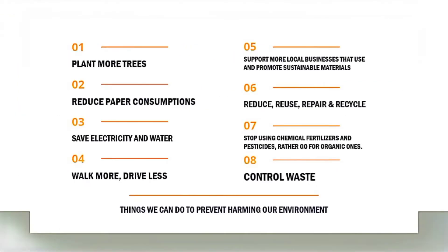Here are things we can do to prevent harming our environment: 1. Plant more trees. 2. Reduce paper consumption. 3. Save electricity and water. 4. Walk more, drive less. 5. Support more local businesses that use and promote sustainable materials. 6. Reduce, reuse, repair, and recycle. 7. Stop using chemical fertilizers and pesticides, rather go for organic ones. 8. Control waste.